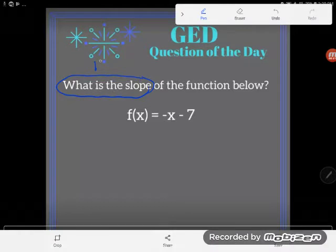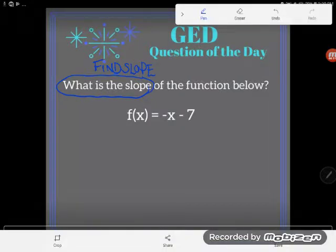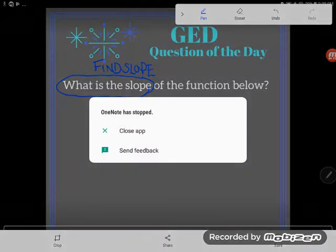Now the tricky thing about slope is that how we find it depends on what we've been given. They tell us this is a function, but don't think this is some new kind of way to find slope. We've learned how to find slope on a graph, when given points, in a word problem, and how to find slope from an equation.